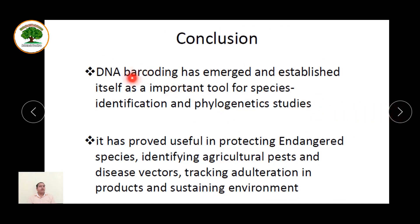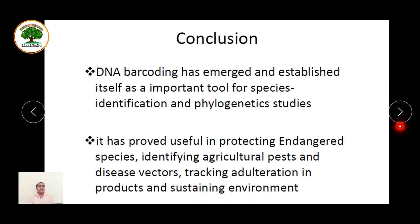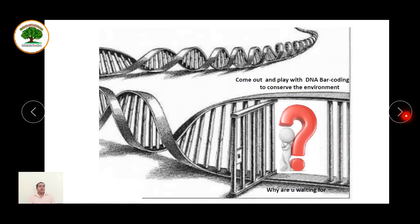In conclusion, DNA barcoding has emerged and established itself as an important tool for species identification and phylogenetic studies. It has proved useful in protecting endangered species, identifying agricultural pests and disease vectors, tracking adulteration in products, and supporting sustainable environments. Nowadays, researchers are using this technique for identifying and creating prints for particular species. Different programs are available for this purpose, and a list is given in the description.